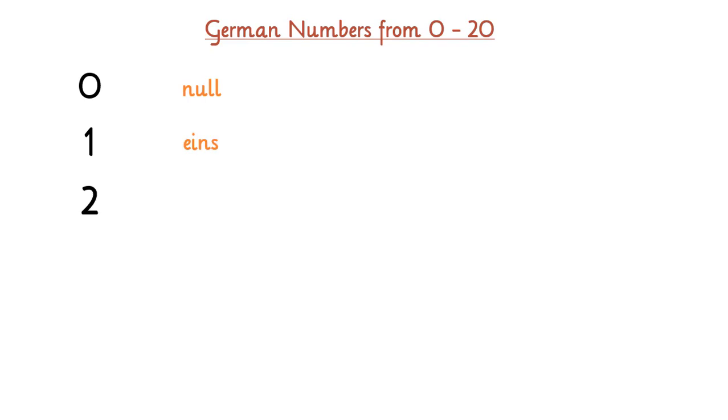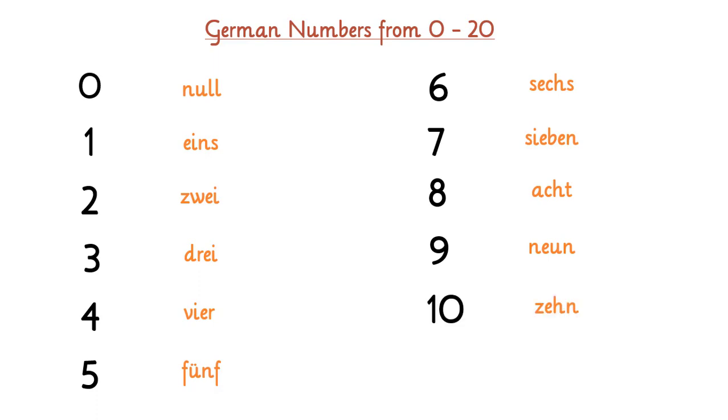Two, zwei, zwei. Three, drei, drei. Four, vier, vier. Five, fünf, fünf. Six, sechs, sechs. Seven, sieben, sieben. Eight, acht, acht. Nine, neun, neun. Ten, zehn, zehn. And that's from zero to ten. And now I'm just going to read from eleven to twenty. Eleven, elf, elf. Twelve, zwölf, zwölf.